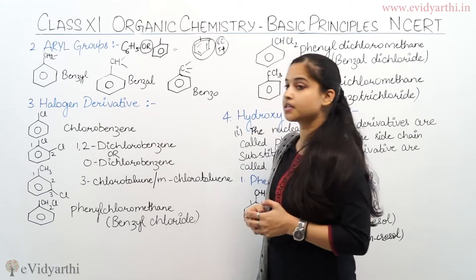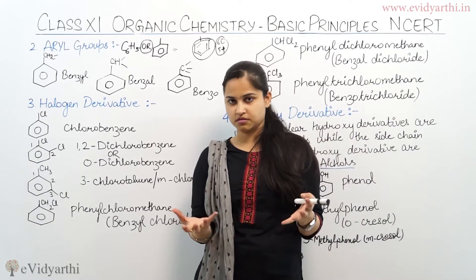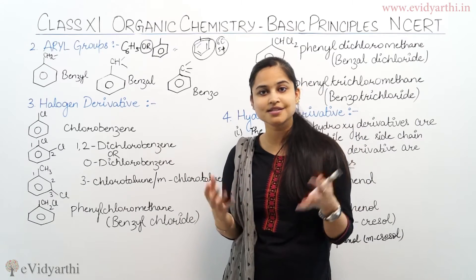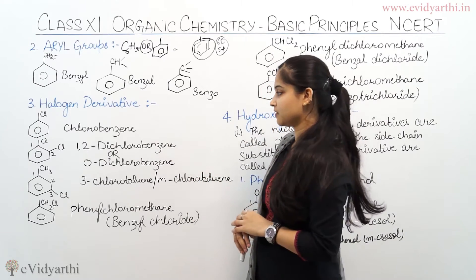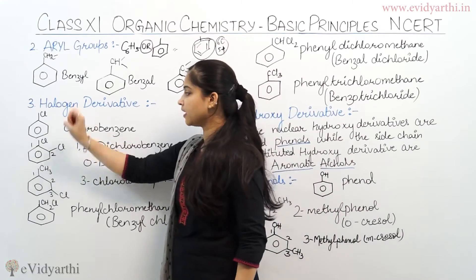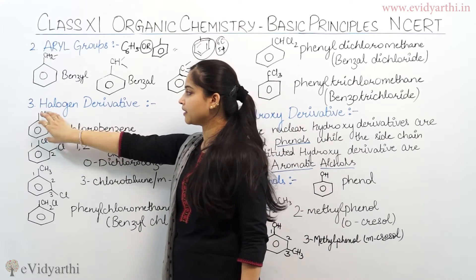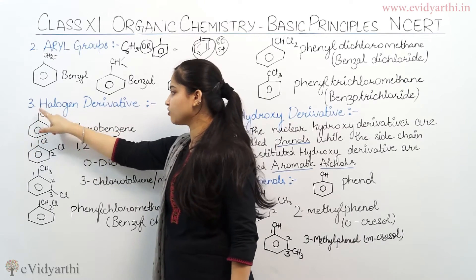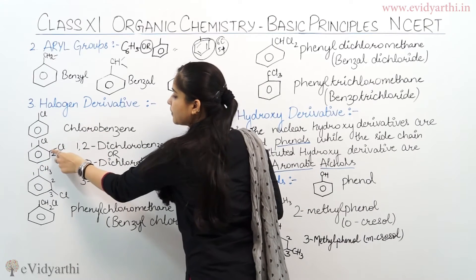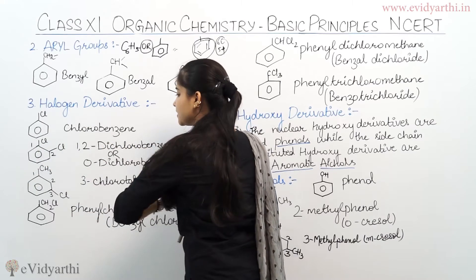Coming to other halogen derivatives — aromatic compounds with halogen derivatives. Halogen means chlorine, bromine, or iodine, and you can place it on the ring. After a benzene ring, when chlorine (Cl) is placed on a carbon atom, we get chlorobenzene. If chlorine is at positions 1 and 2, we get 1,2-dichlorobenzene, or ortho-dichlorobenzene.